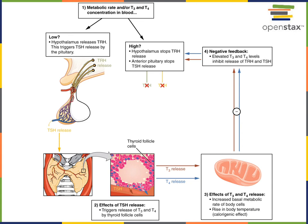The function of the thyroid hormones T3 and T4 is to increase the basal metabolic rate, which stimulates an increase in body temperature. If the metabolic rate and body temperature are too low, the hypothalamus will release TRH, stimulating the anterior pituitary to release TSH. TSH binds to receptors on thyroid follicle cells, which then release T3 and T4. These bind to receptors within cells throughout the body, leading to increased metabolic rate and the calorogenic effect, increasing body temperature. As a negative feedback mechanism, T3 and T4 also bind to receptors in the hypothalamus and inhibit the production of TRH, leading to decreased TSH.